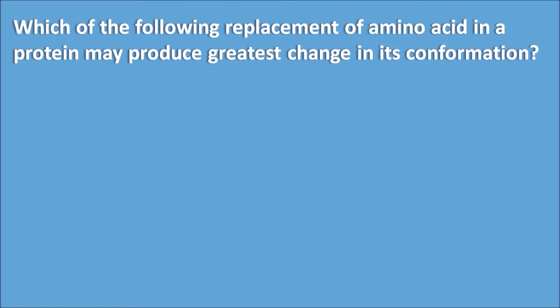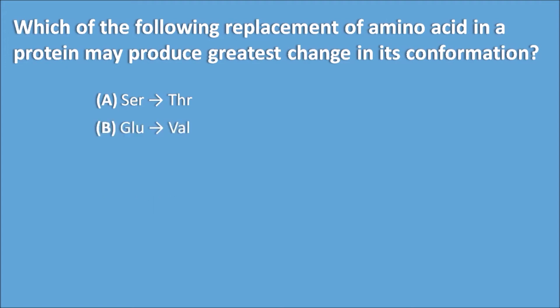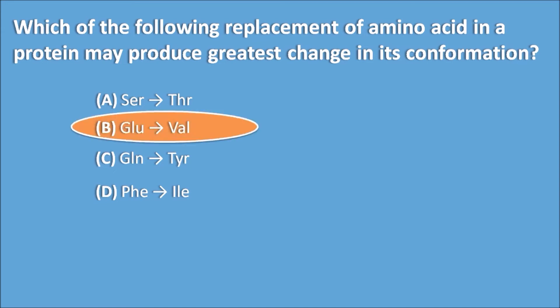Next question: Which of the following replacements of an amino acid in a protein may produce the greatest change in its conformation? A) Serine to threonine, B) Glutamine to valine, C) Glycine to tyrosine, D) Phenylalanine to isoleucine. The greatest conformational change is observed when one amino acid has a non-polar side chain and the other has a polar side chain, causing a sudden change in polarity. The right answer is option B, glutamine to valine.